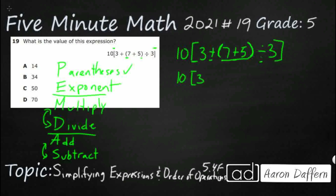So we're going to take our three plus — and I'm going to say seven plus five — and collapse that down to 12, divided by three. We still have these brackets. Now within this bracket, we have two different operations. From left to right we have addition and we've got division. But if we look at our order of operations, division is going to come before addition. So we need to make sure we take care of this division first, because even though it's to the right, it is of a higher order than our addition.